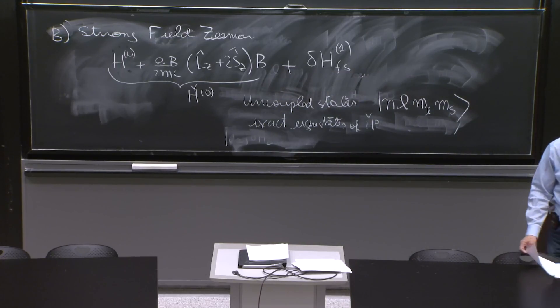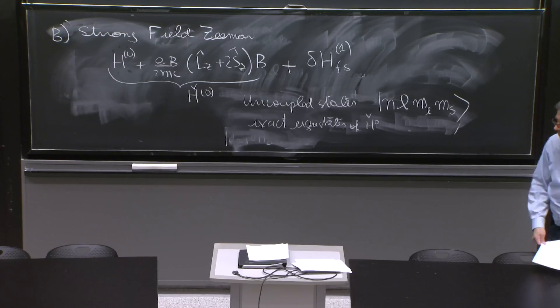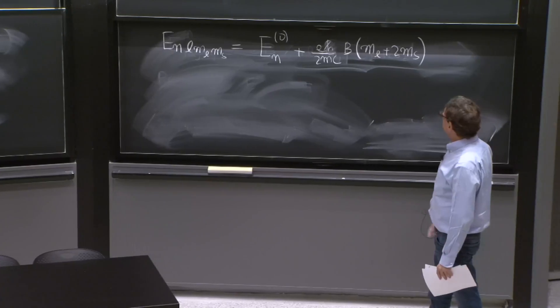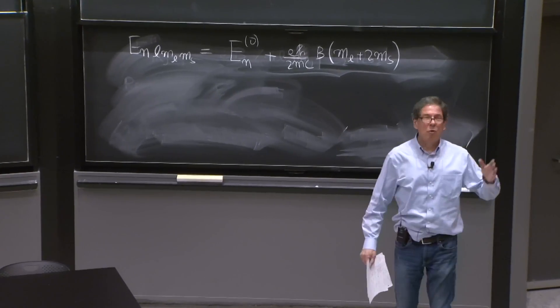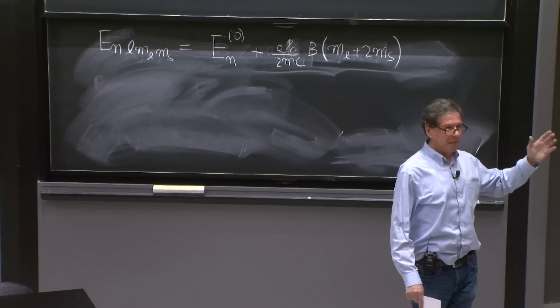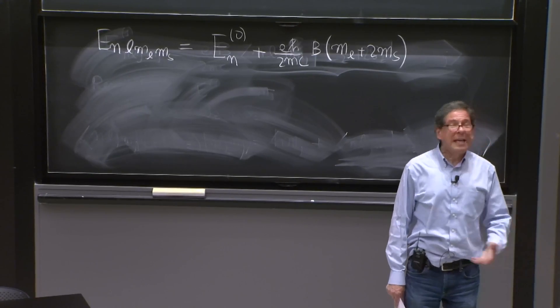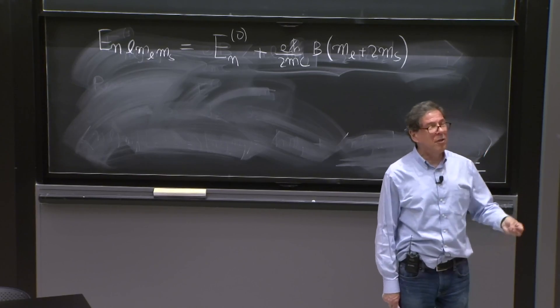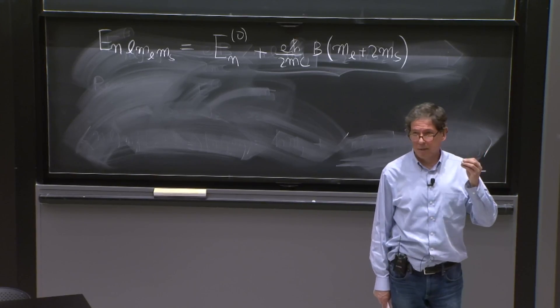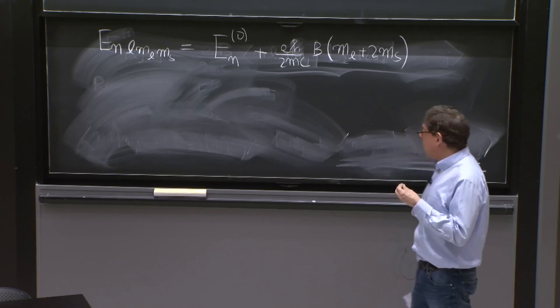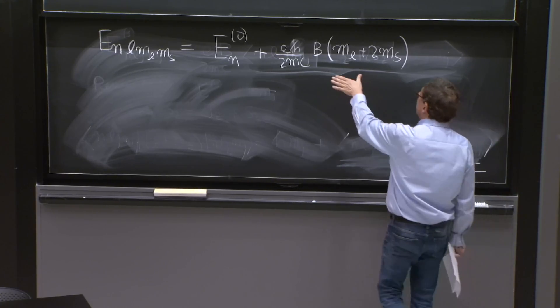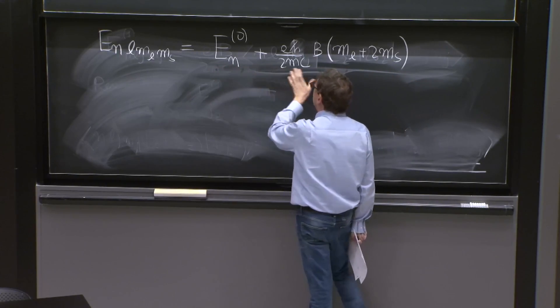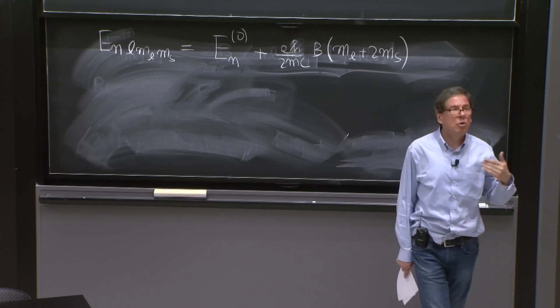Maybe the last thing that helps you visualize what's going on is to understand what happens to the splittings. Because you're going to have to do fine structure splitting. And fine structure, again, you will have to ask, can I use non-degenerate perturbation theory or can I not use it? So you need to know what happened with the degeneracies after you add this term? Are all the degeneracies of the hydrogen atom broken by this term? Or do some survive?